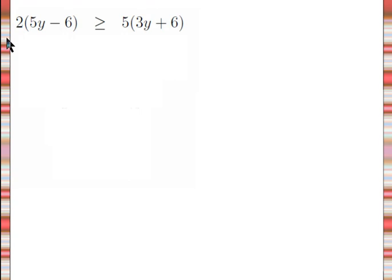So for this one we have 2 times this entire quantity 5y minus 6 is greater than or equal to 5 times this entire quantity 3y plus 6. Before we can do any of that stuff like adding on both sides, subtracting on both sides, dividing on both sides, any of these properties of inequalities, we can't really use those until we have simplified both sides.